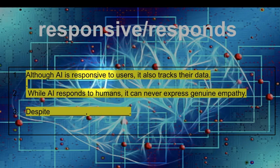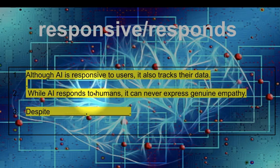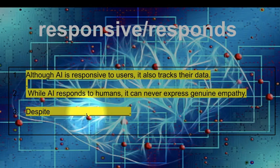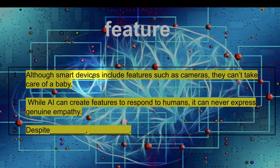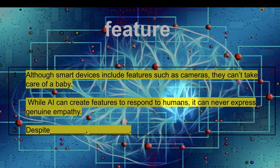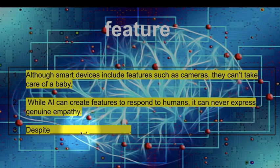Although AI is responsive to users, it also tracks their data. While AI responds to humans, it can never express genuine empathy. Despite the responsiveness of AI, love is more responsive. Although smart devices include features such as cameras, they can't take care of a baby. While AI can create features to respond to humans, it can never express genuine empathy. Despite the many features on your smartphone, humans have more features in their interactions.